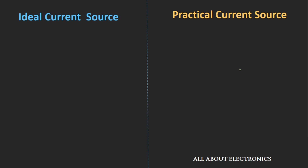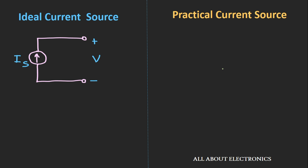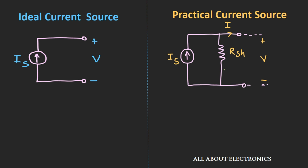Now let's summarize the difference between the ideal and the practical current source. In case of an ideal current source, there is no shunt resistance — or we can say that the shunt resistance in the ideal current source is infinite — so all the current will flow through the load resistor. While in case of a practical current source, it does have some shunt resistance, so all the current will not flow through the load resistor; there will be some leakage current through this shunt resistance.